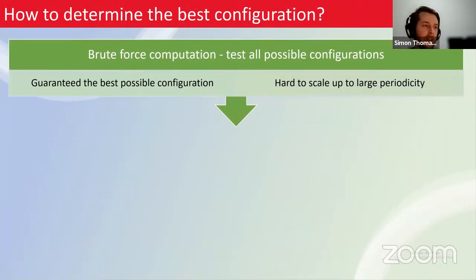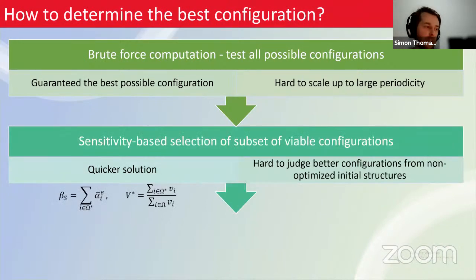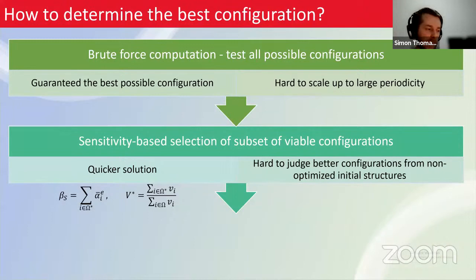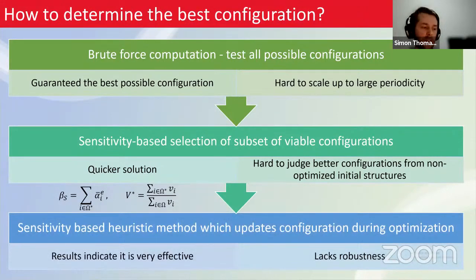How do we determine the best configuration? Brute force computation is guaranteed to find the best but is very difficult to scale for large structures. Instead, we introduce a sensitivity-based selection metric that quantifies the degree of overlap between high and low sensitivity regions, allowing us to select a viable subset of configurations likely to produce more efficient periodic structures.